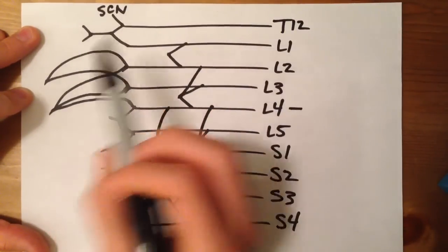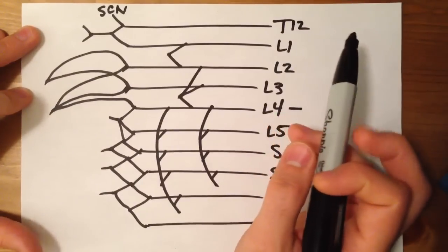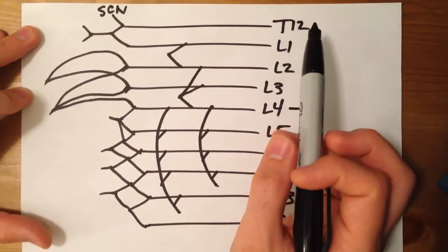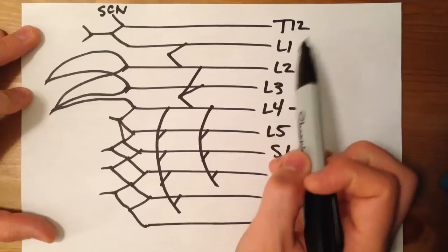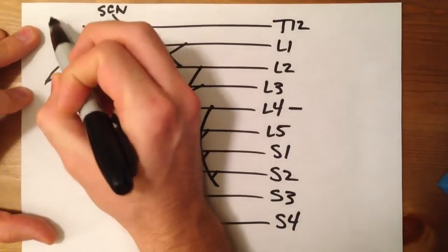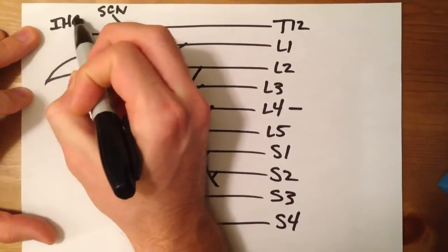These are going to be, according to Gray's 40th, they're really a variable, but according to Gray's 40th, T12 and L1 give you the ilio-hypogastric nerve.